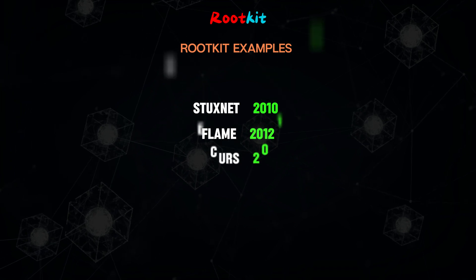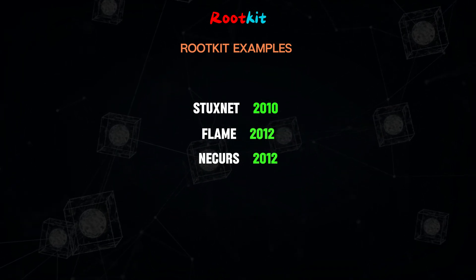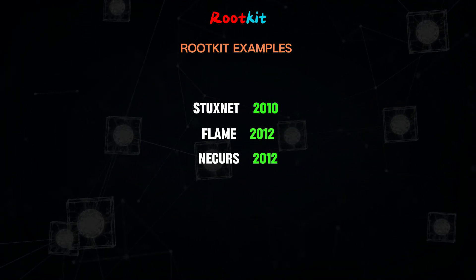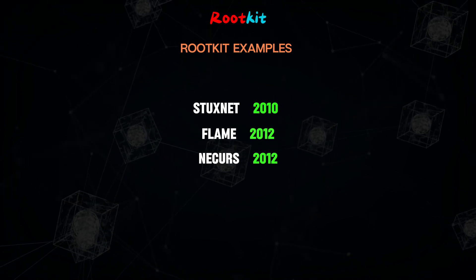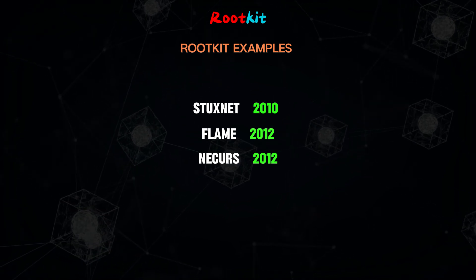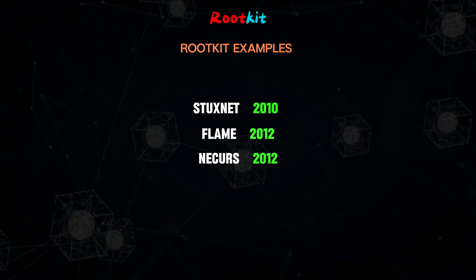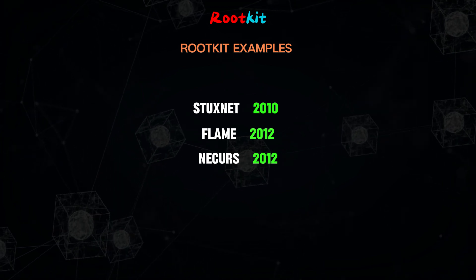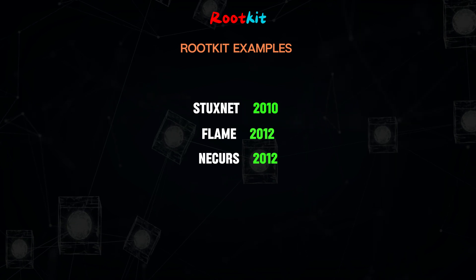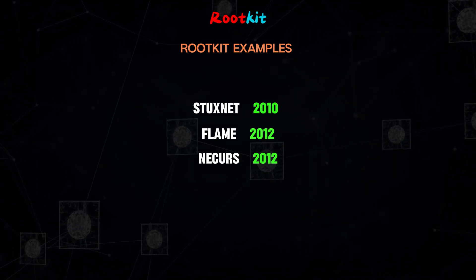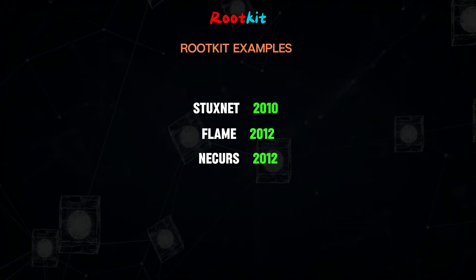In 2012, NICURS emerged as a rootkit and was reportedly detected in 83,000 infections that year. Associated with elite cybercriminals in Eastern Europe, NICURS is considered to stand out due to its technical complexity and ability to evolve.